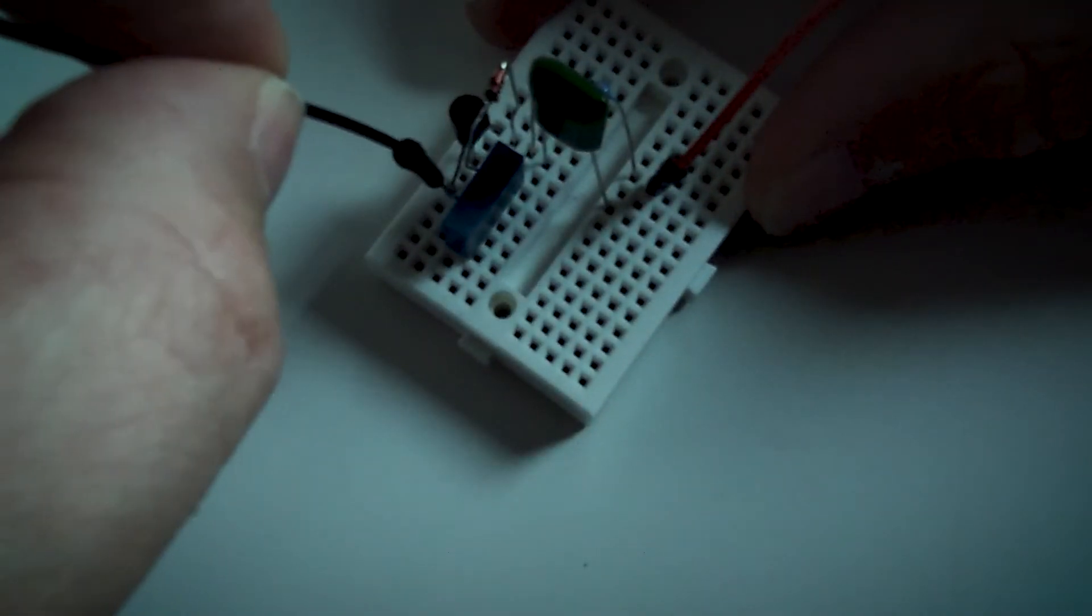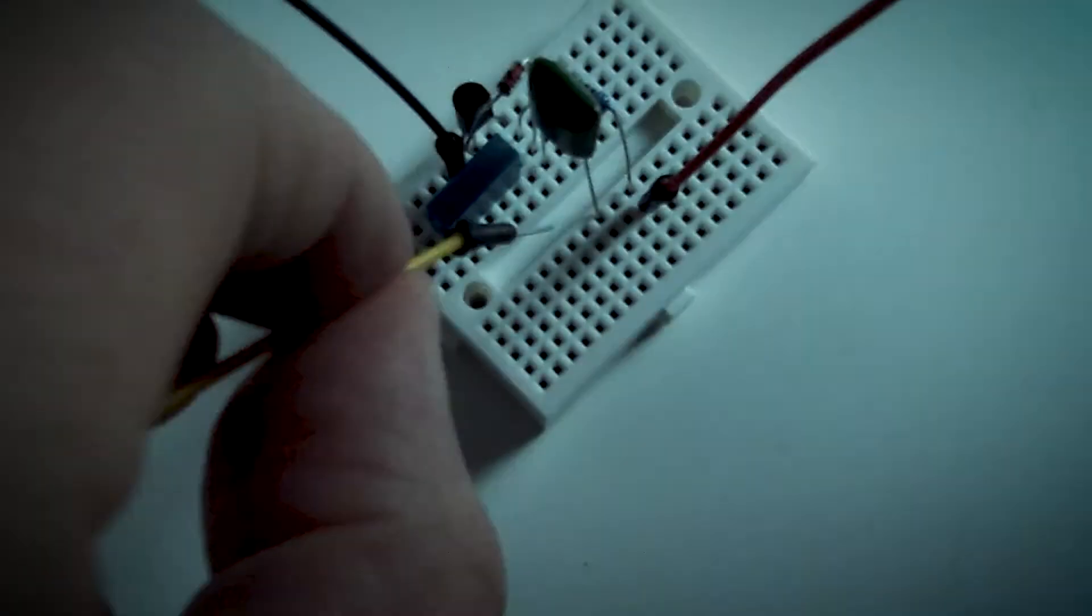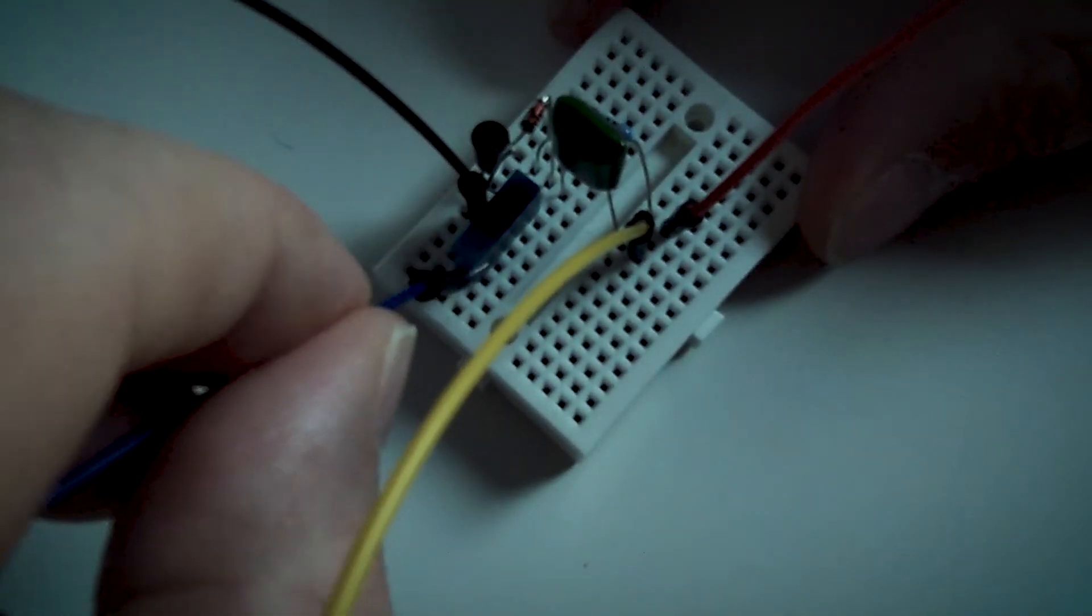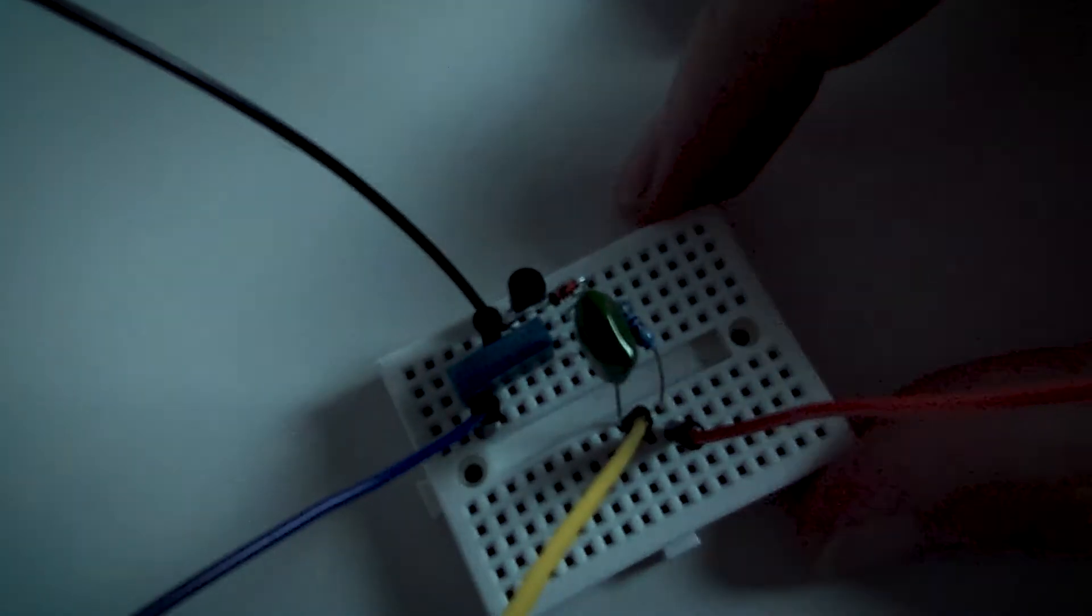...goes to the 9 volt. The first leg of this transistor goes to ground. The leg of the 100 nanofarad goes to the output, and the other side of this capacitor goes to the input. So it looks like this.